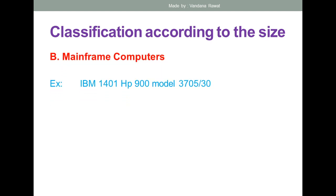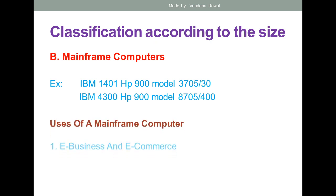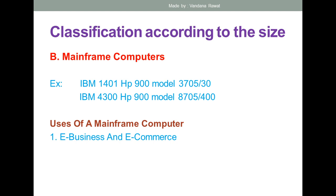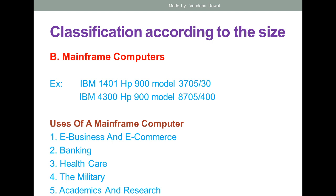Examples of mainframe computers include IBM 14001, HP 900, and IBM 4300. The uses of mainframe computers include e-businesses, e-commerce, banking, healthcare, and military applications. Mainframe computers are also used for managing and controlling data processing files. In academics and research, mainframe computers can also be utilized.